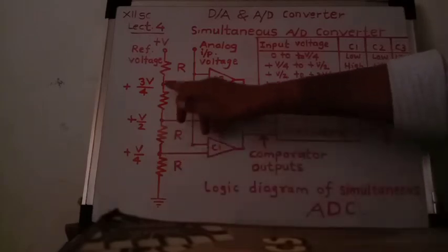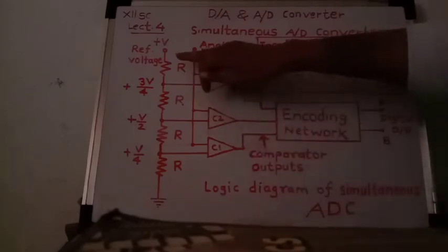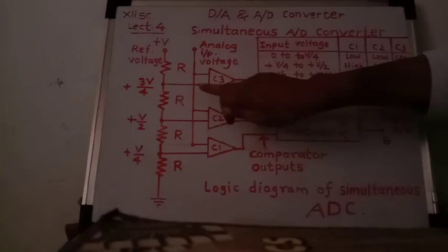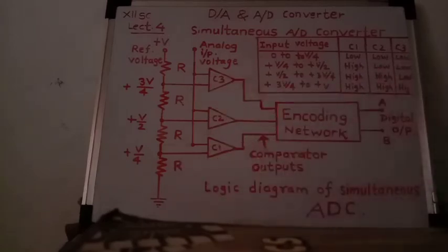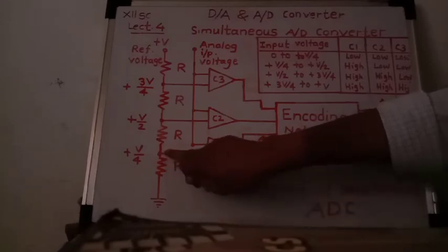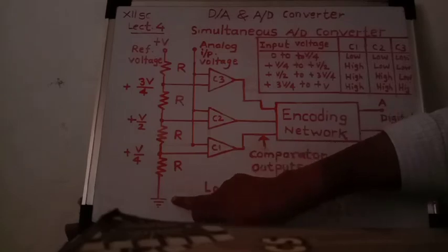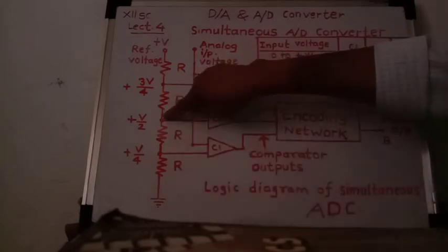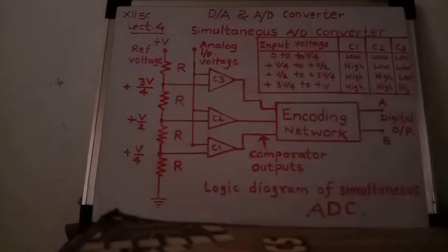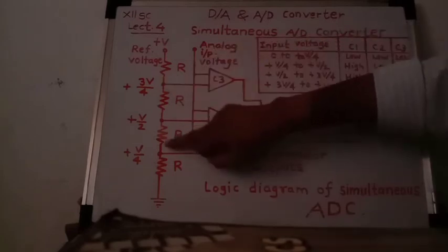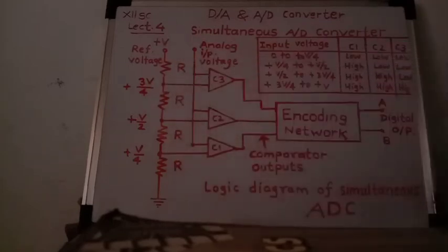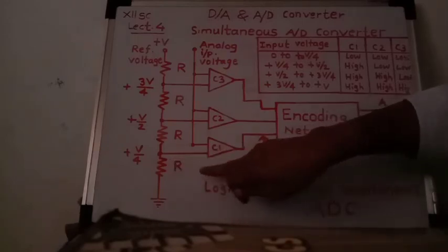Three reference voltages are taken from the voltage divider. Since there are four equal resistors, the voltage is divided equally across each, so the voltage across each resistor is V/4. With respect to ground, the voltage at the first tap is V/4, at the second tap is V/2 (V/4 + V/4), and at the third tap is 3V/4 (V/4 + V/4 + V/4). These three reference voltages are applied to one input of each comparator.